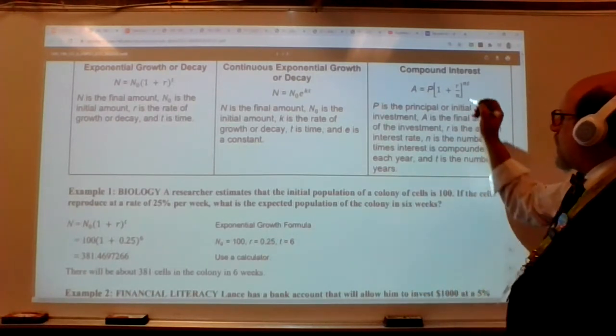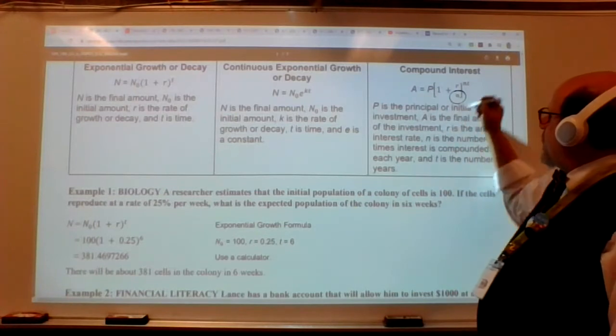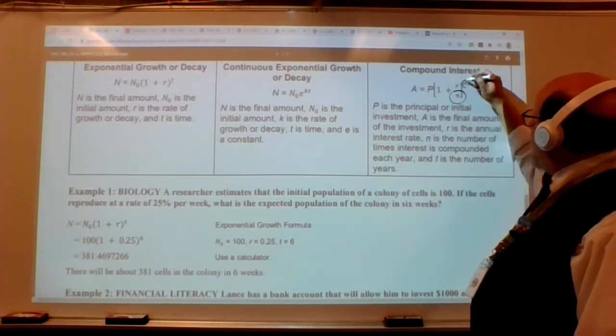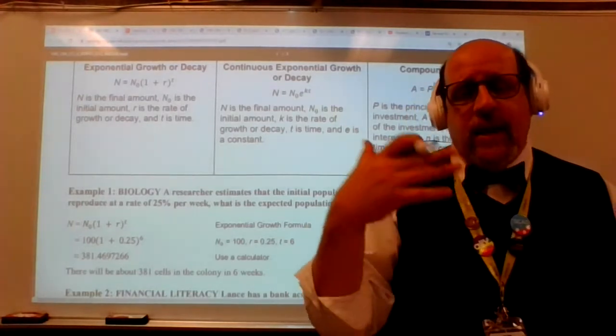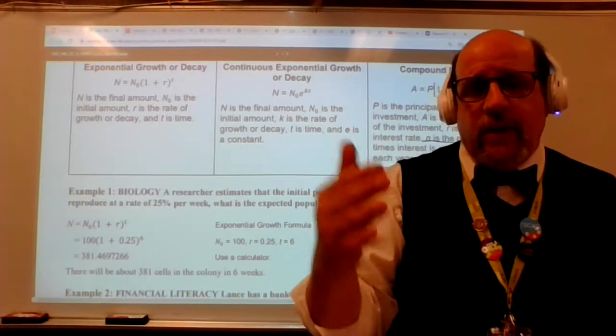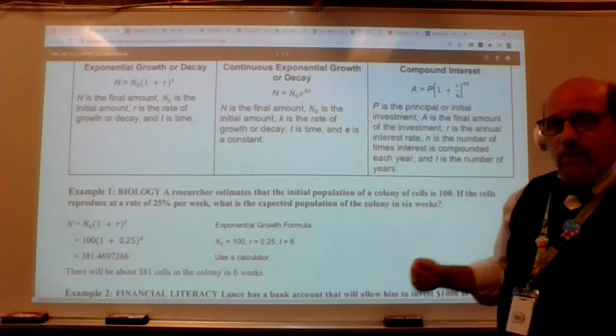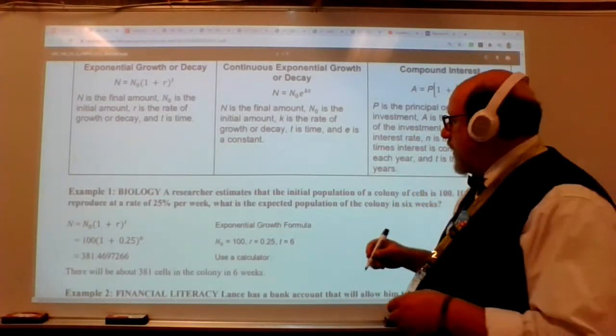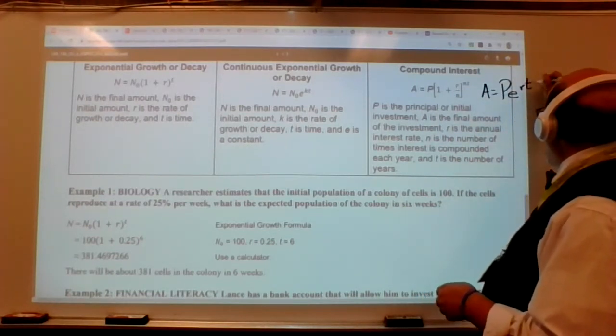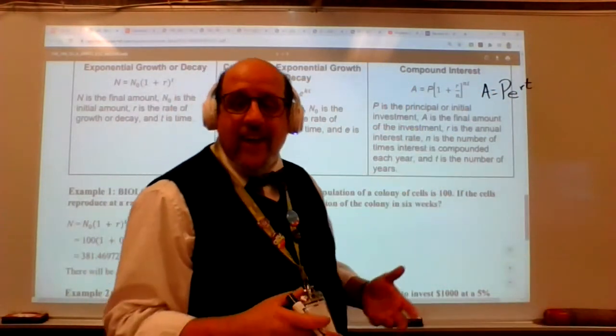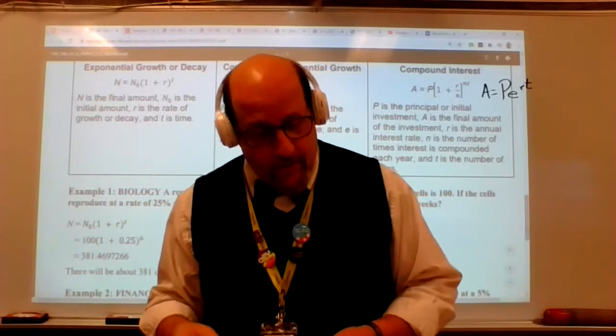This is continuous exponential growth, and this is where Euler shows up. If we have continuous growth and it's growing over time, over and over, all we do is we take that original number, we multiply by Euler's number, and then we take K, which is the rate of growth or decay, and T is the time that we're given. So I'll show you that momentarily. But the last couple of things I want to talk about are compound interest. There are two formulas. This formula, which is very much like this formula, the only thing that's different about compound interest is this N here.